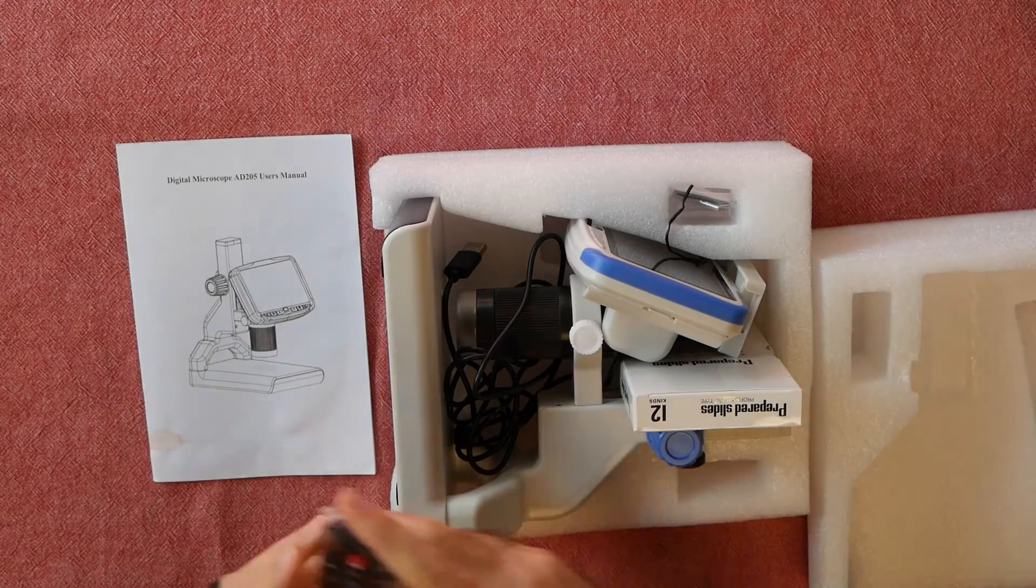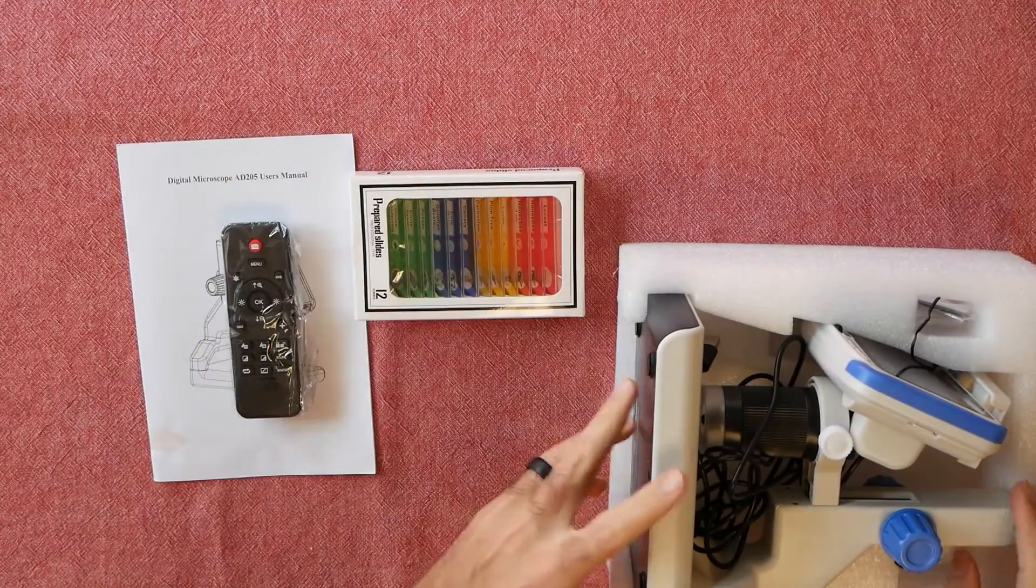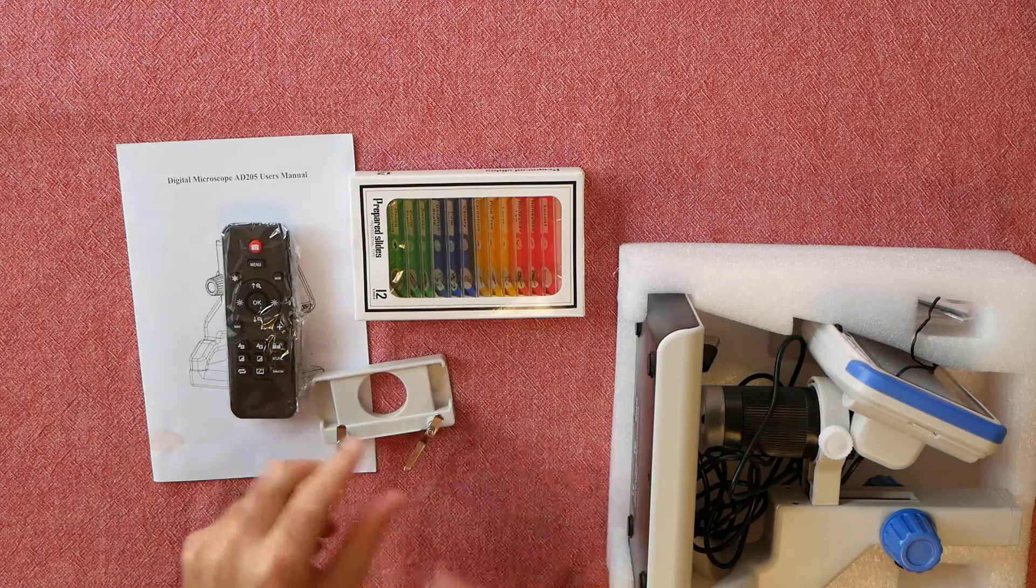In the box, there is a remote, a set of microscope slides, a movable block for the slides, and the main microscope body with a USB cord for power, and some different light barriers.